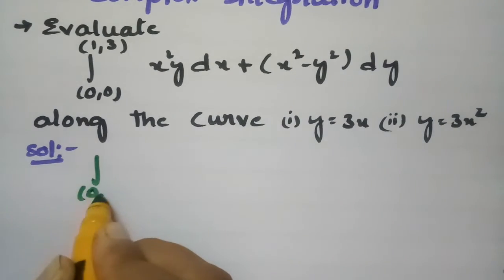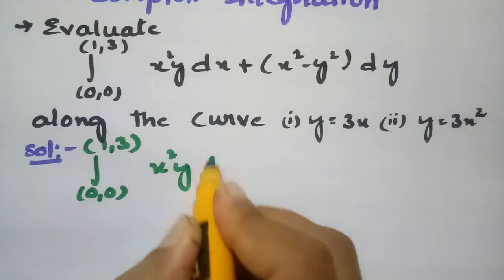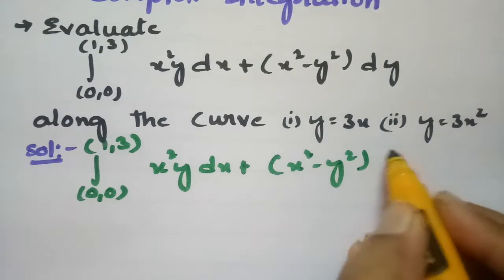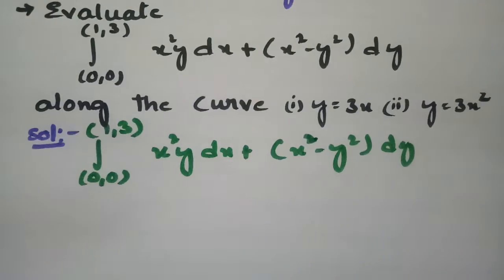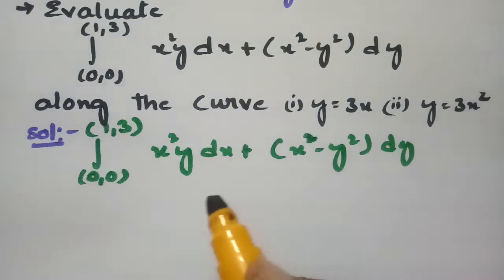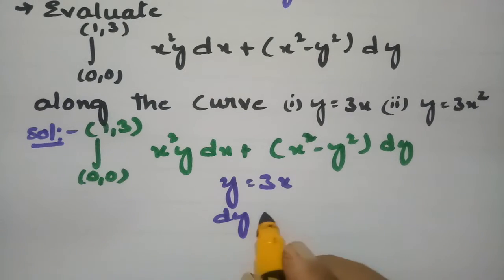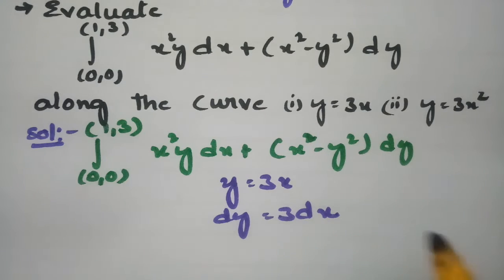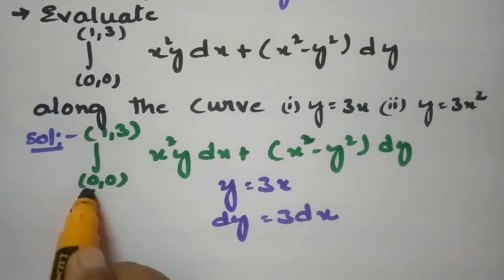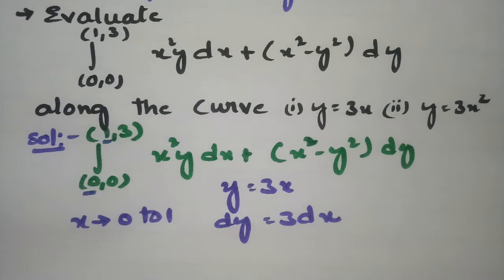First, we evaluate the integral from 0 to 1 of 3x²y dx plus (x² minus y²) dy along the curve y equals 3x. Here y equals 3x, so dy equals 3 dx. I am now transforming each and every variable in terms of x. The x limits are from 0 to 1.